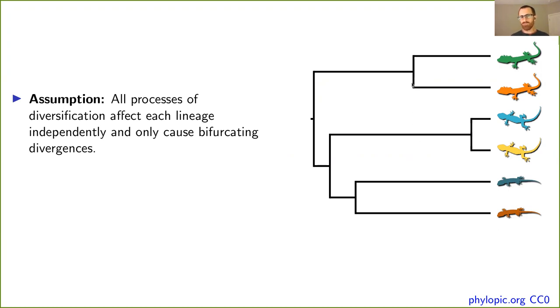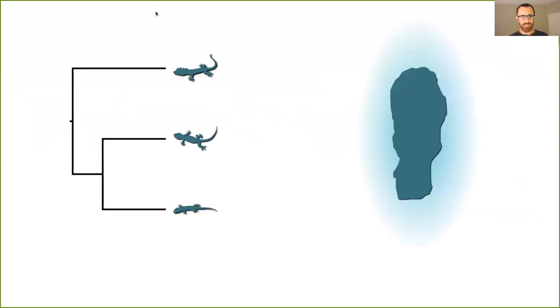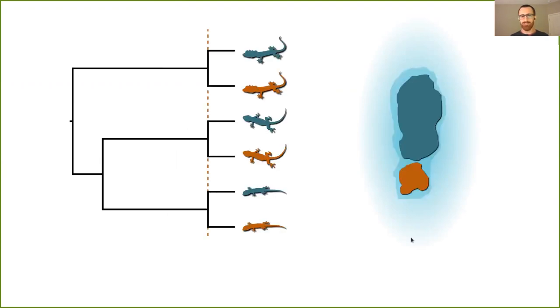There's lots of reasons why that assumption might be violated. Let's look at a cute little example here of three lizards co-occurring on this island. Let's imagine sea levels go up, fragment the island, and cause all three species to diverge. That's clearly violating the assumption that divergences are independent across the tree.